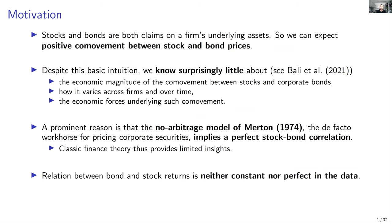Going back to the seminal paper of Merton 1974, one of the key takeaways — used in many areas of asset pricing including the derivative literature and the credit risk literature — is that both stocks and bonds can be seen as contingent claims written on the unlevered firm assets. The model predicts that both payoffs are positively related to the level of firm value, and thus we should expect a certain level of positive co-movement between stock and corporate bond.